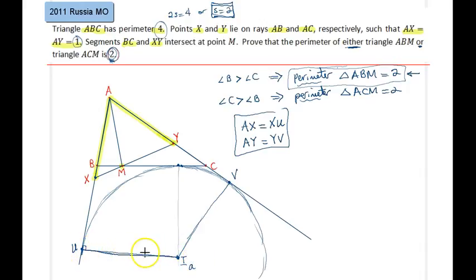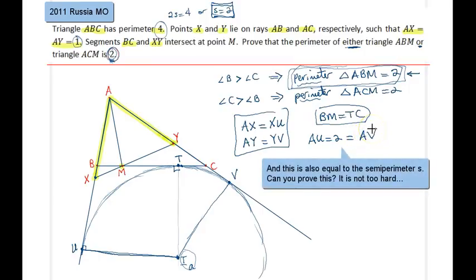And that point here, let me call it point T. Recall AU is equal to 2, notice that that's also equal to AV.